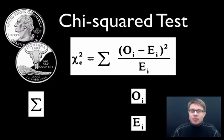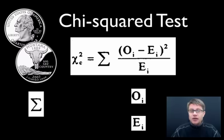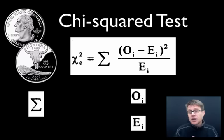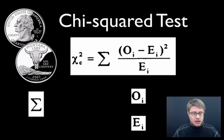Hi, it's Mr. Andersen and welcome to my podcast on the chi-squared test. The chi-squared test — if you look at the equation, lots of students get scared right away. It's really simple once you figure it out, so don't be scared away. Chi-squared test, especially in AP Biology and in science, is very important. It's a way to compare when you collect data whether the variation is just due to chance or due to one of the variables you're actually testing.